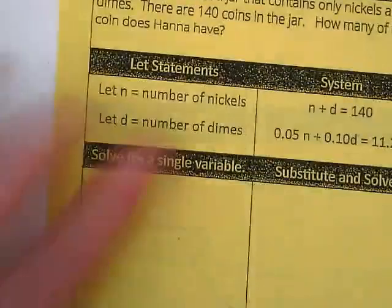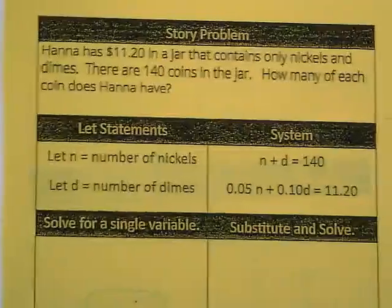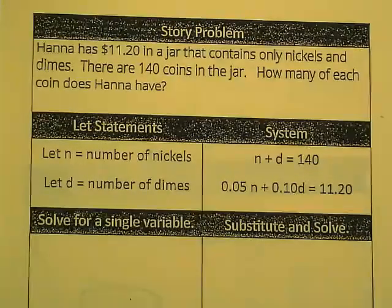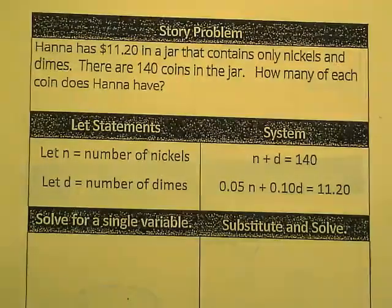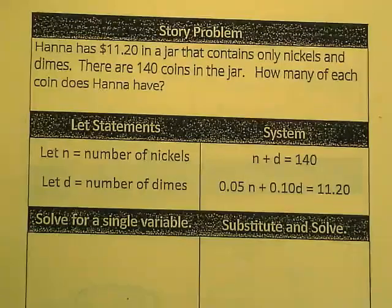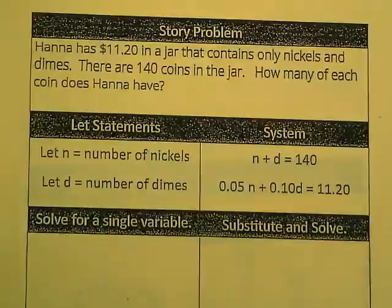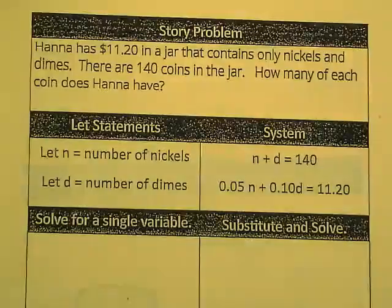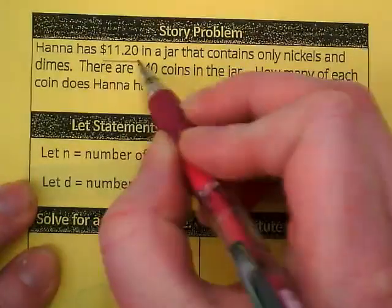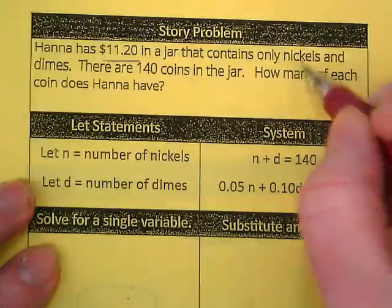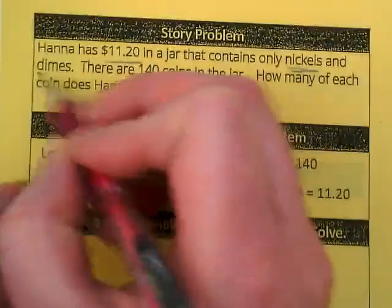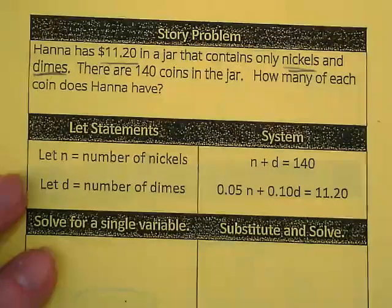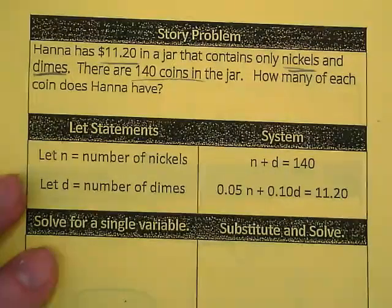Turn it over. This is such a standard system of equation question. You've got coins in a jar, two different kinds of coins. We know what the total of the coins is, like we know how many coins are literally in the jar and we know how much money is in the jar. So Hannah has $11.20 in a jar. That contains only nickels and dimes. There are 140 coins in the jar.